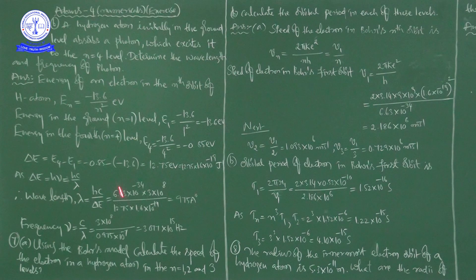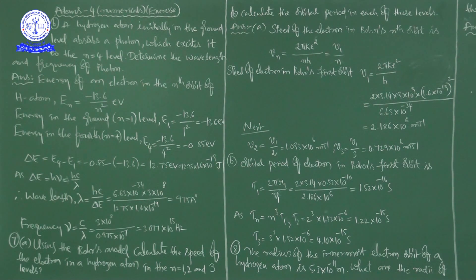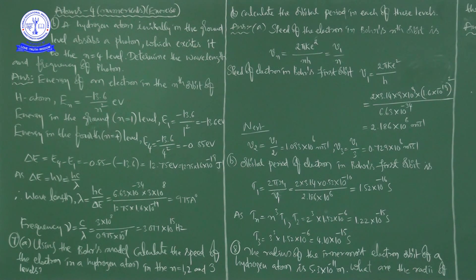When explaining this problem, keep in mind the structure of the atom — what is the nucleus, where the orbits are present, how electrons are revolving, and what is present in the nucleus, that is protons and neutrons. Also keep in mind what the ground level is and what the 1st, 2nd, 3rd, and 4th levels are. This is especially important for hydrogen atom problems.